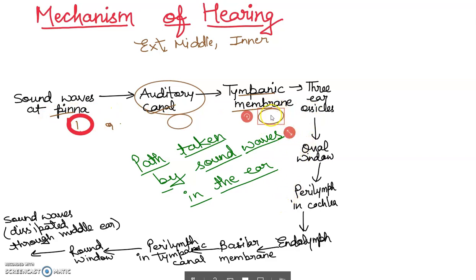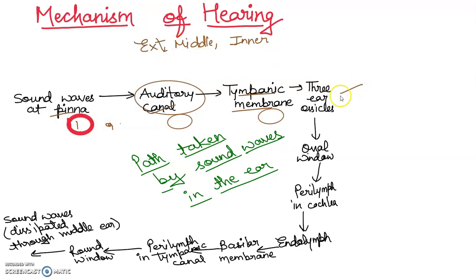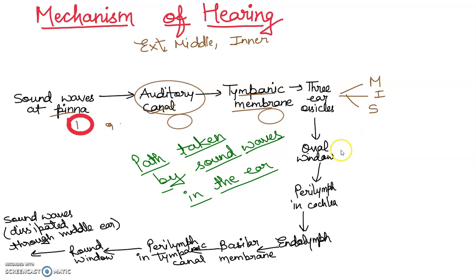The sound waves strike the eardrum, and the vibrations of the eardrum are transmitted through the three ear ossicles — the malleus, incus, and stapes. These ear ossicles can magnify the vibrations 20 to 25 times by their lever-like actions.